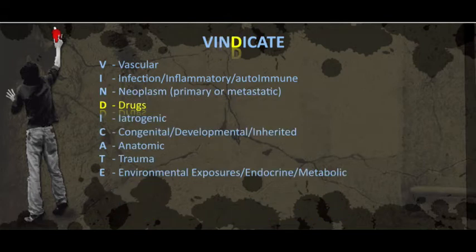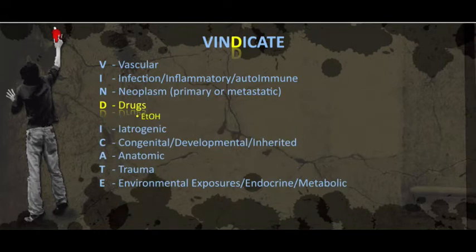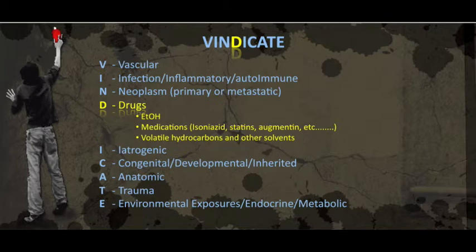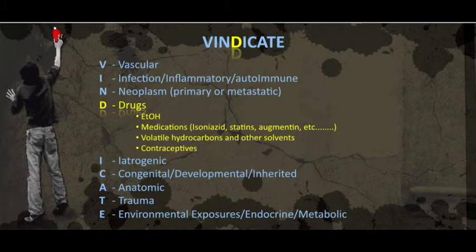D stands for drugs. Chronic alcohol use can cause fatty liver, otherwise known as steatosis, hepatitis, and cirrhosis with varying levels of jaundice. Many medications cause jaundice, including isoniazid, augmentin, and statins, among others. Also volatile substances, and finally contraceptives.